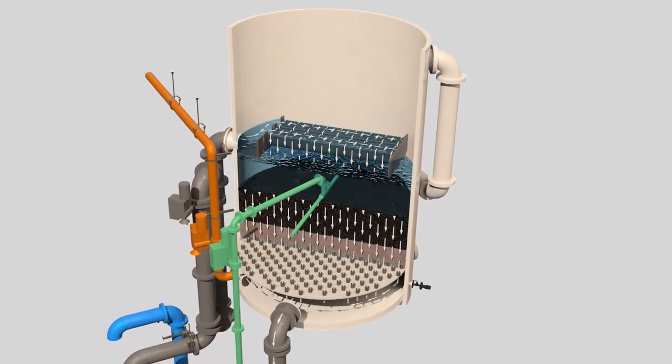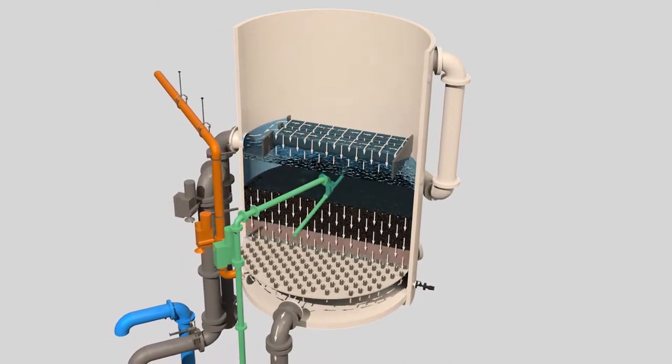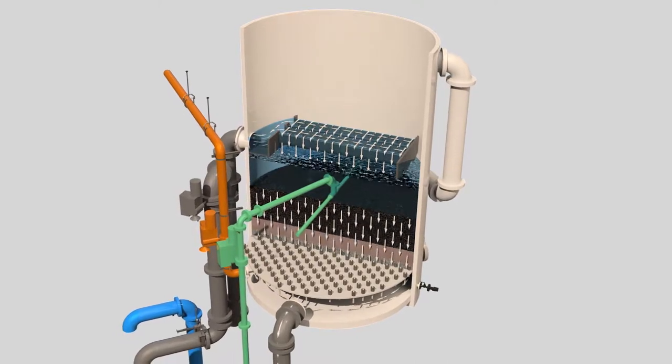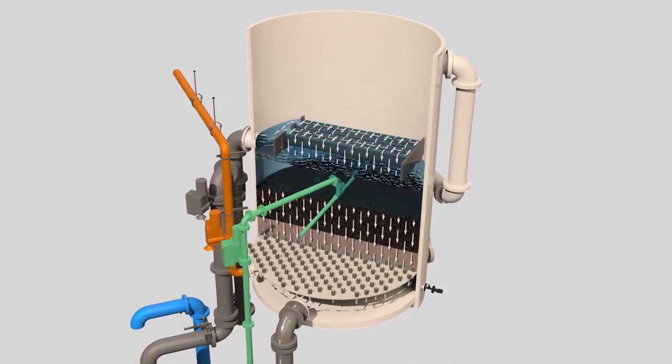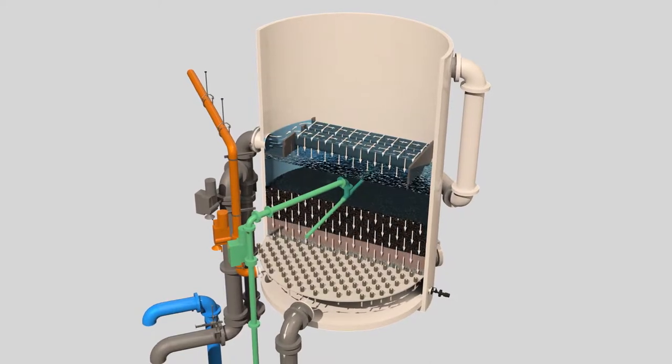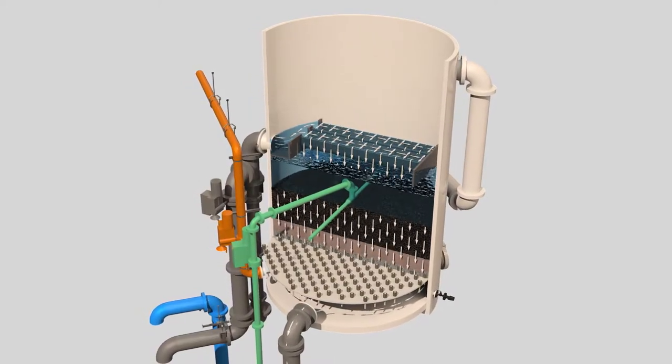The polished water leaves the media filters and is filtered one more time through a 5 micron bag filter. This very fine filter is the last line of defense to protect the CRF's reverse osmosis system from particles.